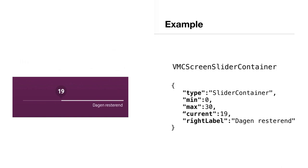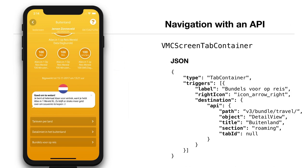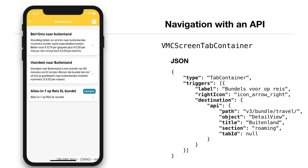So how about navigation in the app? When you press a button, the button already knows what the destination will be — it knows it from the JSON it received, which contains a destination object. In that destination object there is an API object containing a path and an object type. The object in this example is a detail view, so we know what page to load next. When we are on the detail view, we know we should load the path — in this example the bundle/travel URL. So when you press, for example, the bundles for travel, the next page loads, we get the data, and display it to the user.